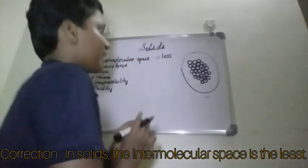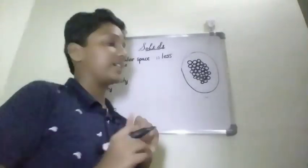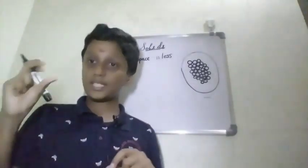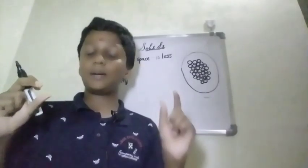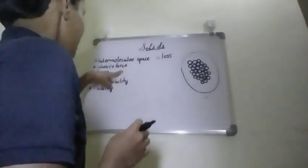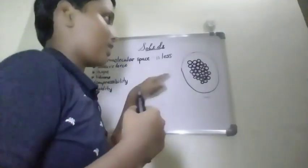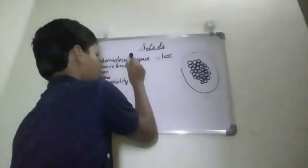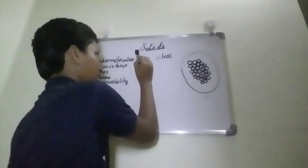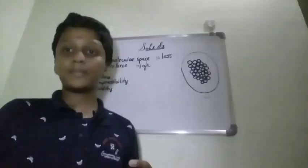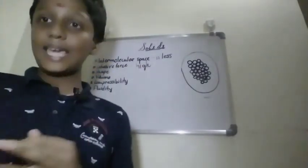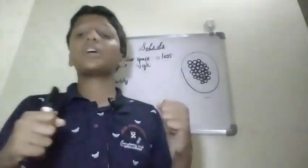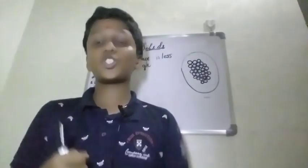In solids, intermolecular space is less — that is the first property. Next, cohesive force, or the intermolecular force of attraction: how much force does a molecule exert on the nearby molecules? Cohesive force is the highest in solids. That is why they are so tightly packed. The cohesive force is high in solids.